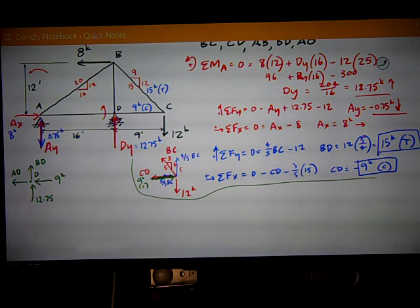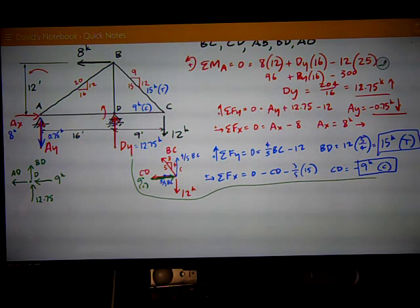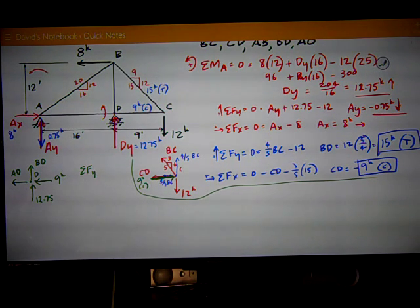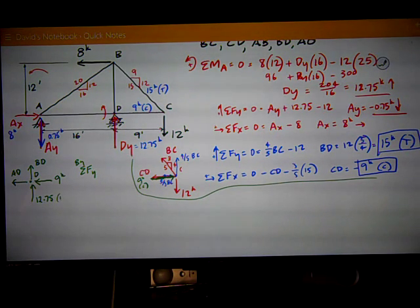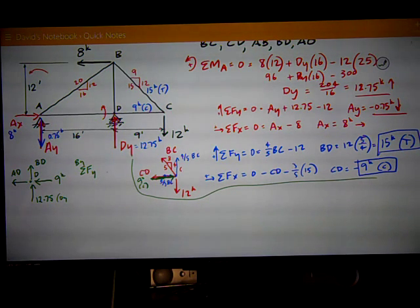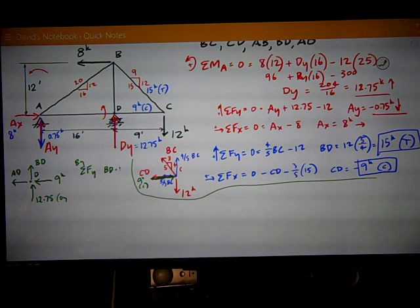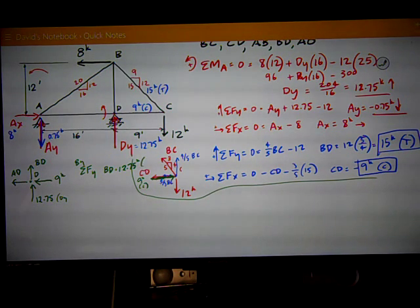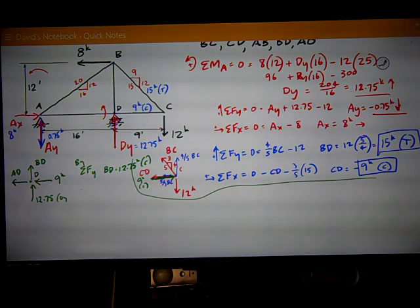So, this is real easy just by inspection. By sum of forces in the Y, I've got 12.75 from DY. And BD also going up, assumed up. So, therefore, it has to be, there's nothing else in the Y direction, so BD has to be negative, or 12.75 kips compression. It's got to be the opposite direction of the reaction at D.